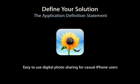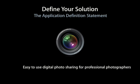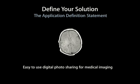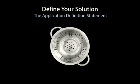So with that in hand, we were able to craft an application definition statement: easy to use digital photo sharing for casual iPhone users. Many developers punt on the intended audience and just say 'iPhone users.' It's really important that you be as precise as possible. If we change the audience to professional photographers, we'd end up with Aperture for the iPhone — a completely different application, just by changing our intended audience. And to take it further, if we use medical imaging, we'd end up with MEMS or some other imaging application on the iPhone — even though it's still easy to use and digital photo sharing. So it's supremely important that you figure out all three components.